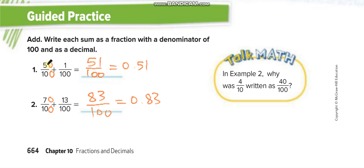It will become 50 over 100. 50 plus 1 is 51, which is 0.51. Multiply by 10 up and 10 down, it will become 70 over 100. 70 plus 30 is 83. Why we are multiplying by 10, guys? To make the denominators same, because we can't add until the denominators are same.